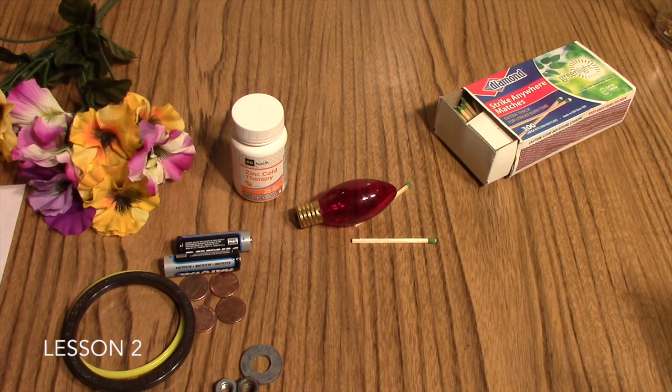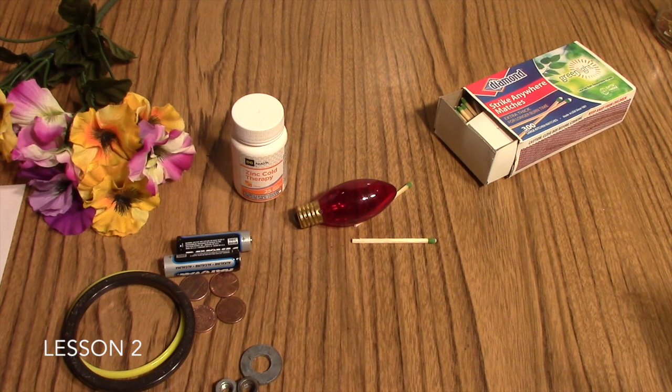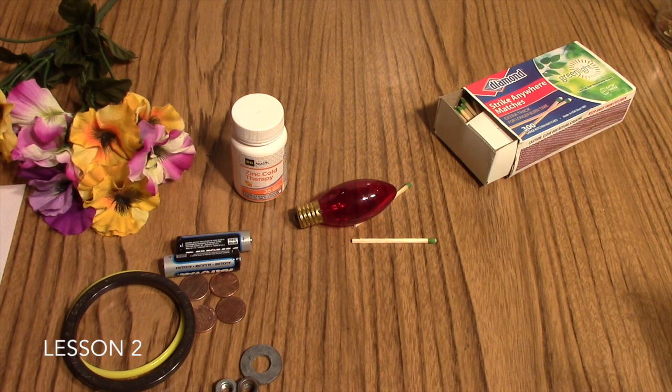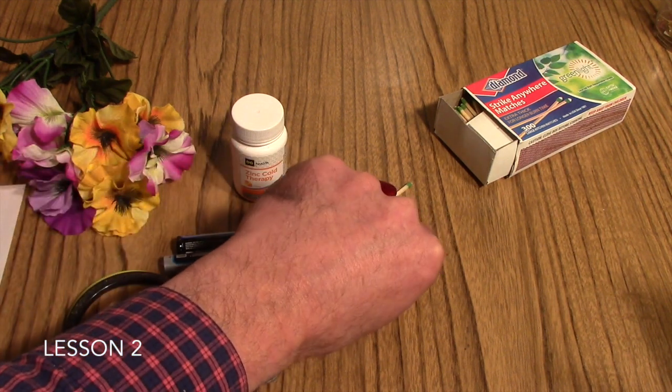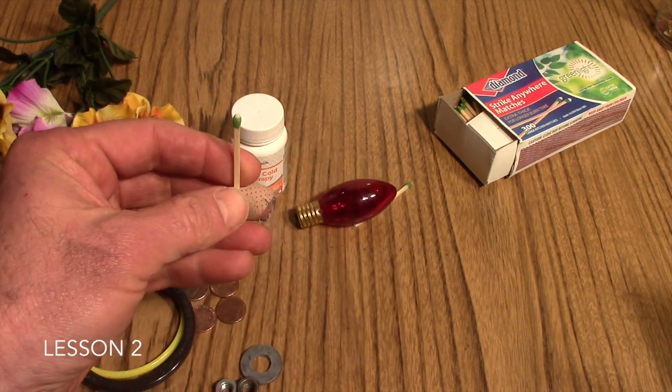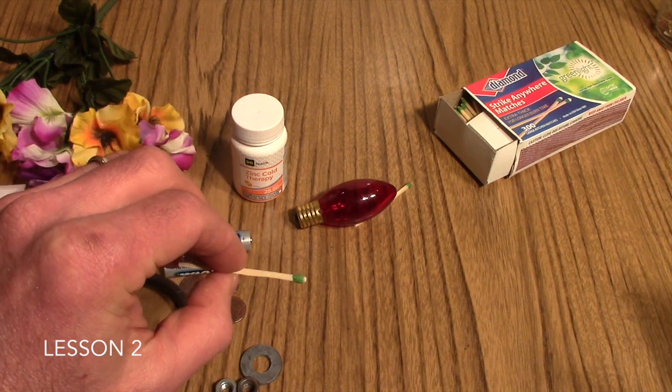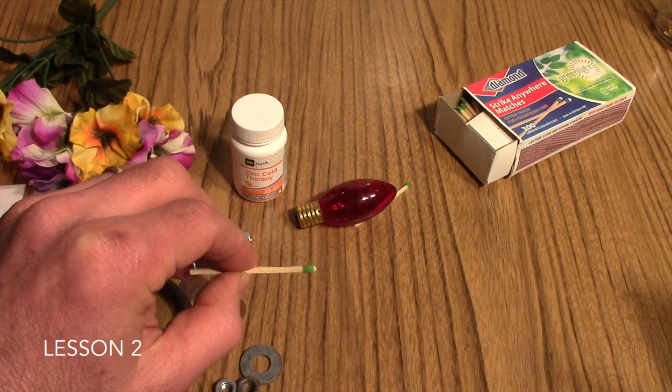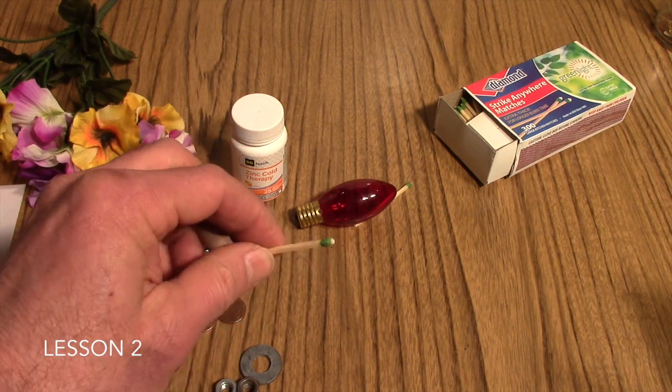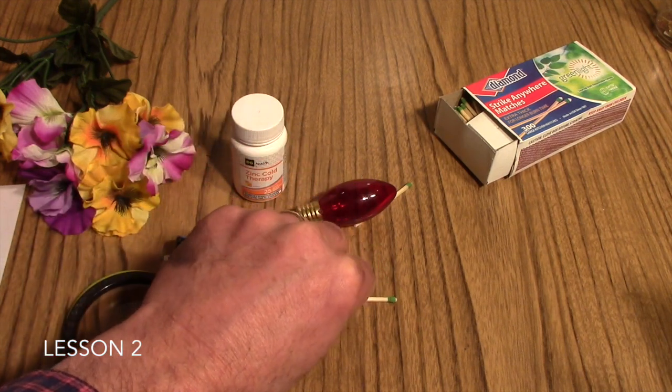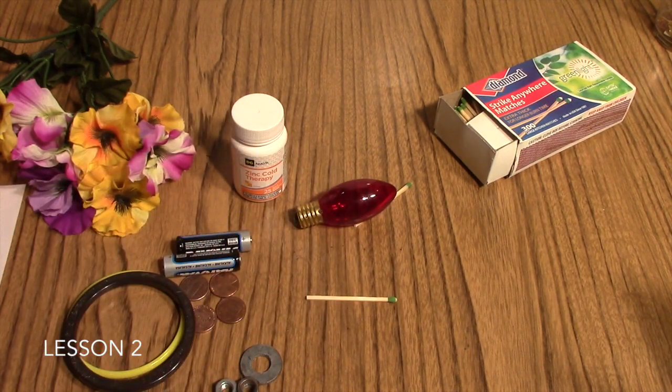They also should be able to describe their model for you and tell you why they used the parts that they did, and then tell you how many of each part that they used. For example, if they did use matches in their model of phosphorus, to tell you how many matches they used, and if those matches represented neutrons, protons, or electrons. And obviously they should have used 15 of each item to represent those subatomic parts.